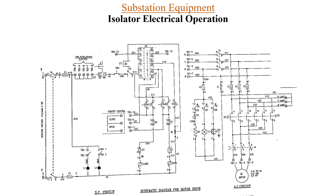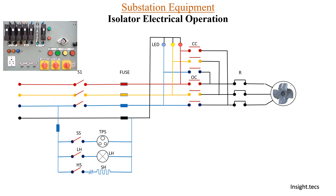The basic wiring for electrical operation is divided into two parts. The first part indicates the AC supply power circuit for the motor — you can see R, Y, and B phase. Whenever the switch is on, power comes to the motor through a contactor switch. The contactor switch is operated using a DC circuit at 110 volts. We will now discuss in detail the power circuit and how the contactors are operated using this DC circuit.